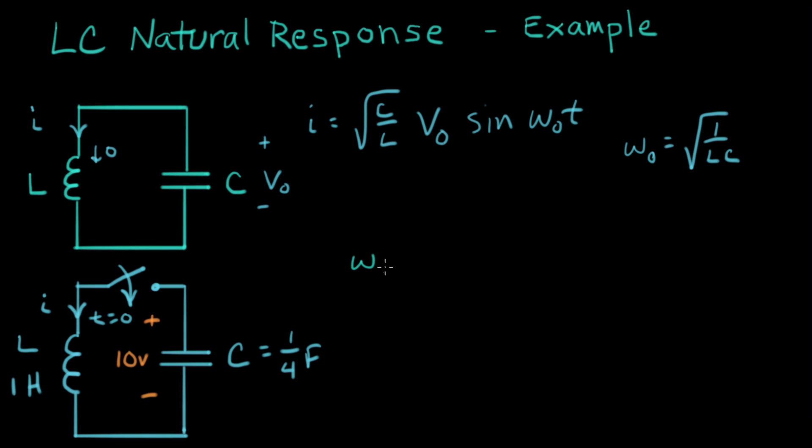Omega-naught equals one over the square root of LC. So that equals square root of one over one Henry times one quarter farad, which equals square root of four, or equals two, and that's in units of radians per second. That's the natural frequency.